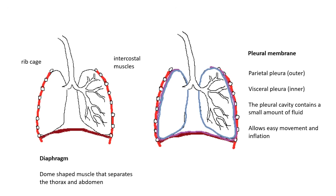The pleural membrane separates the lungs from the rib cage. And there are actually two membranes: the parietal pleura, which is connected to the rib cage, and then the visceral pleura, which is like the balloon surrounding the lungs. In between them, there's a small amount of fluid. Because as your lungs get bigger and smaller, they will rub against the inside of your rib cage. So this allows easy movement — it lubricates this movement — and it allows inflation, allowing your lungs to actually blow up like a balloon. The pleural membrane is in between your lungs and the inside of your rib cage.